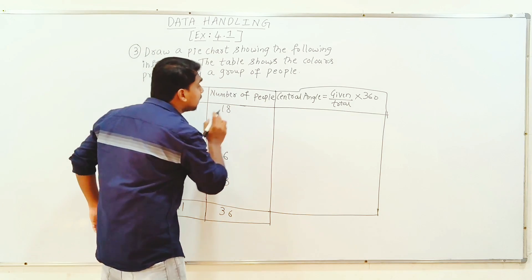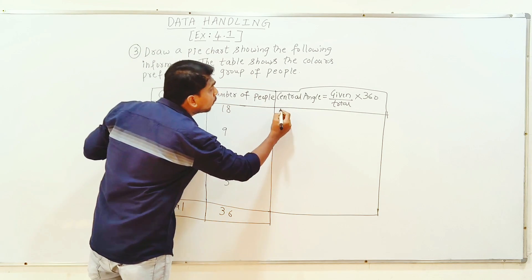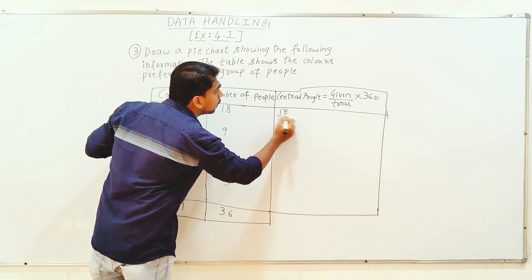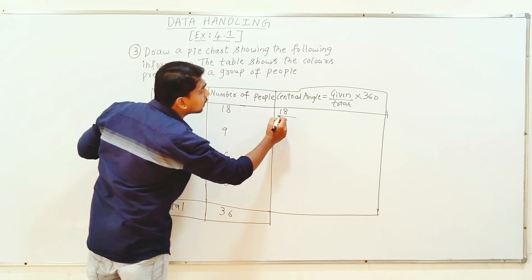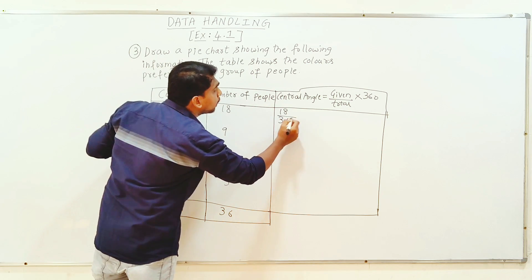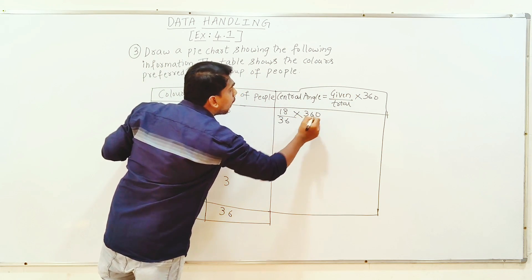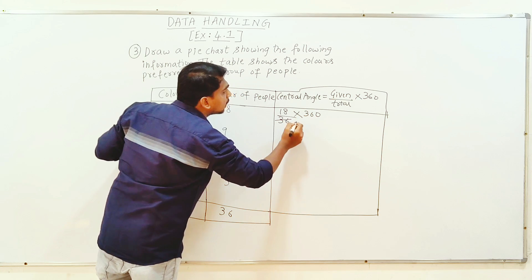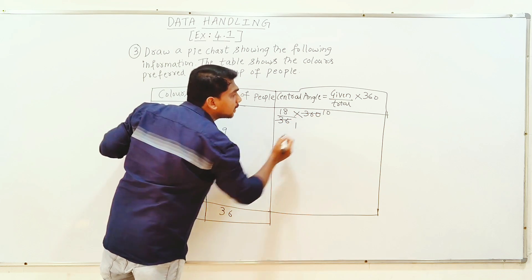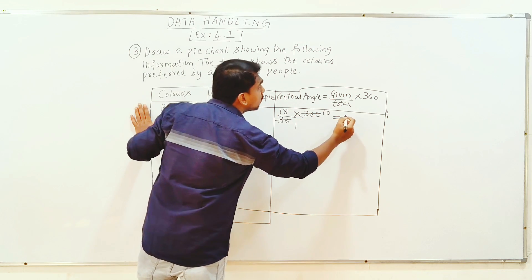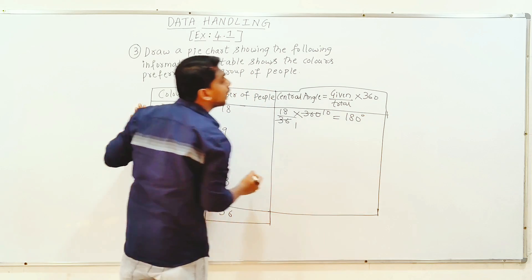So the central angle for blue color is given by: value divided by total, into 360. Cancel 3610, and 18 into 10 gives 180 degrees.